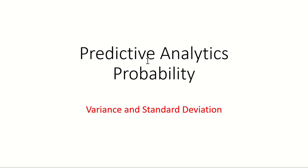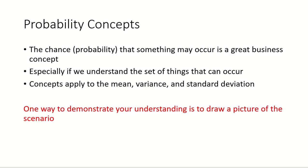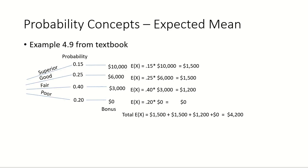The last thing we're going to talk about in predictive analytics in the area of probability is how to calculate the variance and standard deviation associated with probability outcomes. We're going to use the concept of Bayes again, where if we can outline all the potential outcomes, it allows us to do some pretty powerful things.